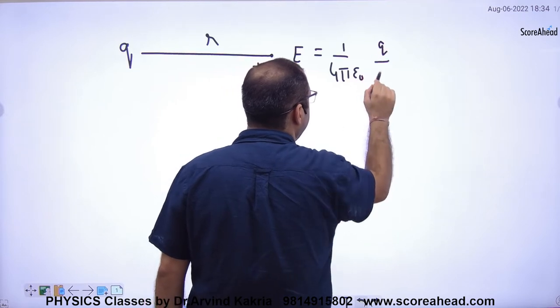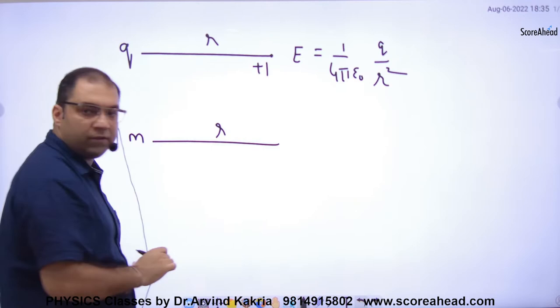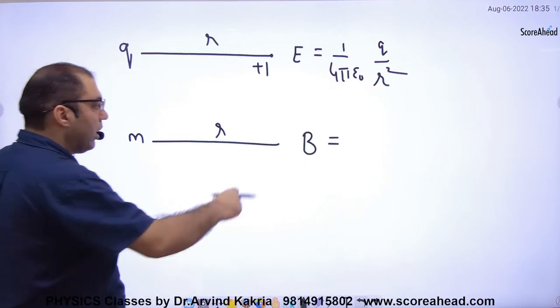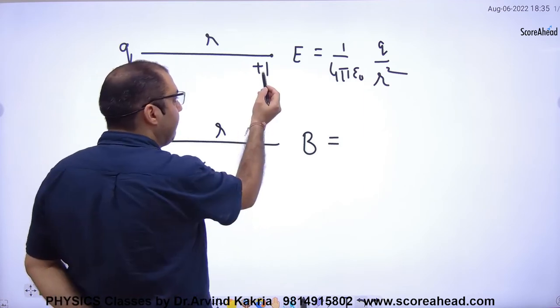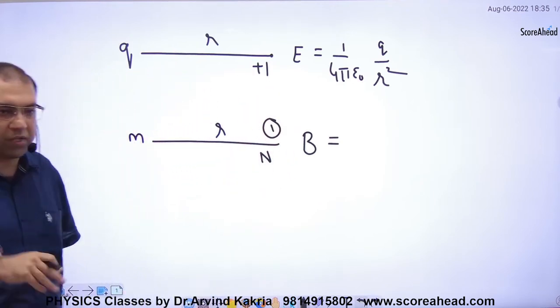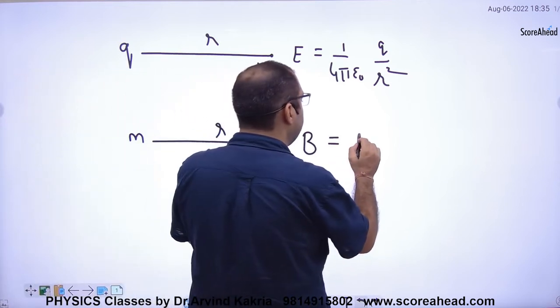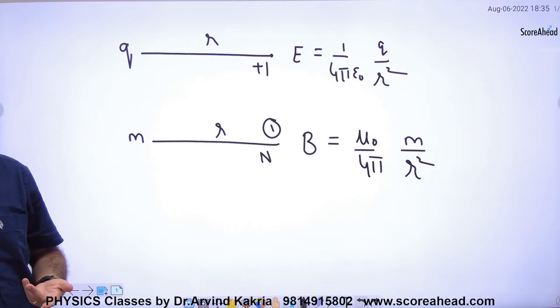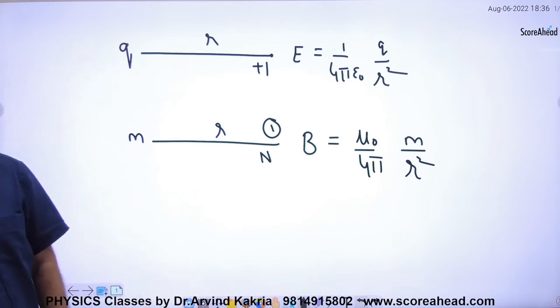Obviously, epsilon 0 q divided by r square. Similarly, if pole strength, which is the distance, is plus 1, pole strength is 1. And the pole, imagine which is north, so what will be there? Mu 0 by 4 pi, charge m, r square. Same m, r to r. And the answer rule is that you can also charge pole strength.